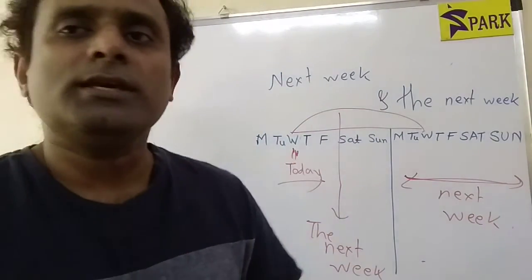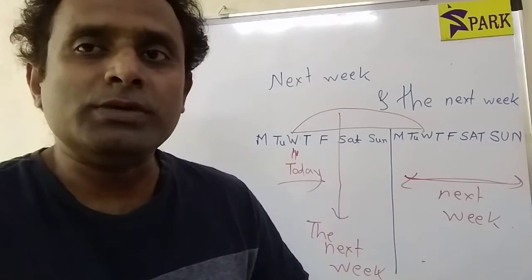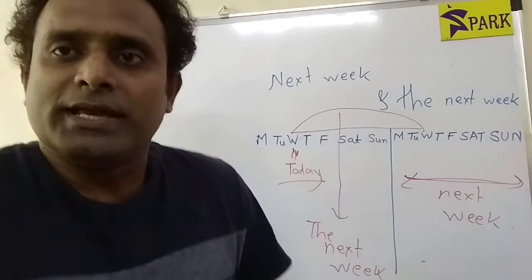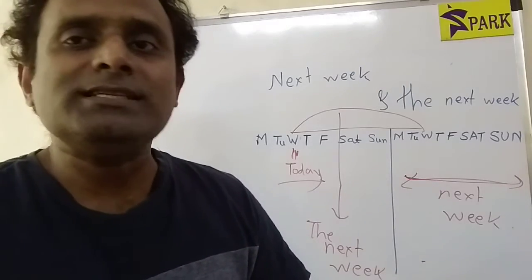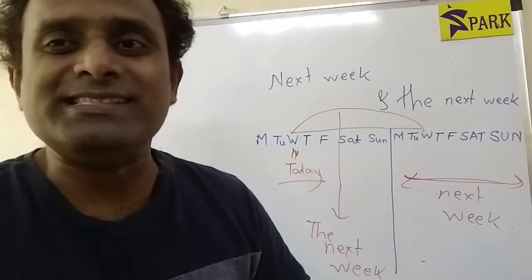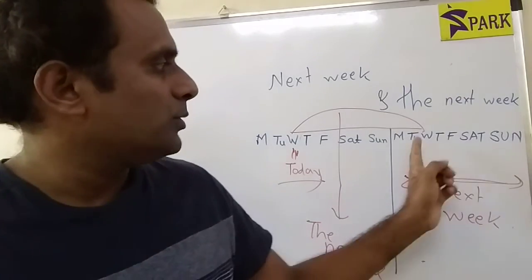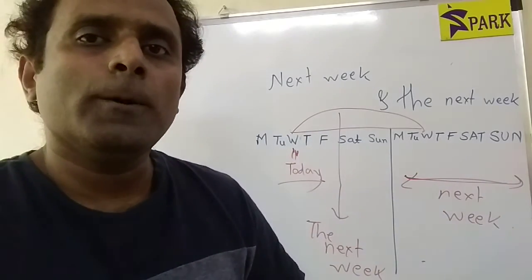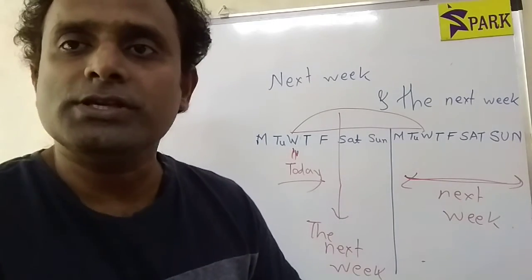For example, somebody asks me, 'Can we meet tomorrow?' and I say, 'No, I am busy the next week.' If today is Wednesday and my friend wants to meet on Thursday, saying 'I am busy the next week' means I'm busy from today, Wednesday, until next Wednesday — a full seven days from today.